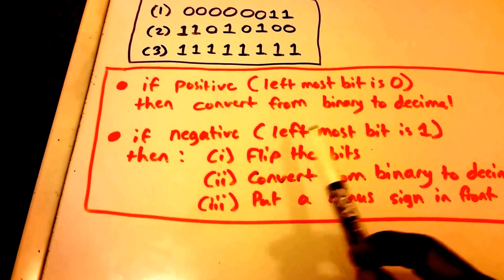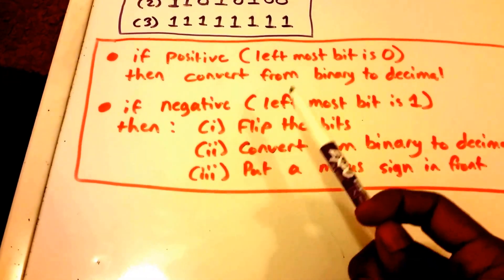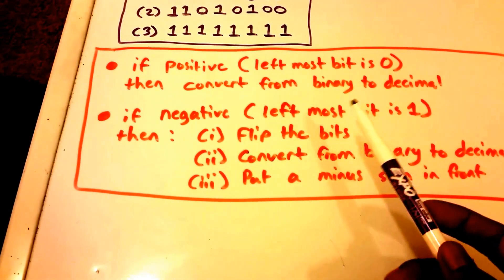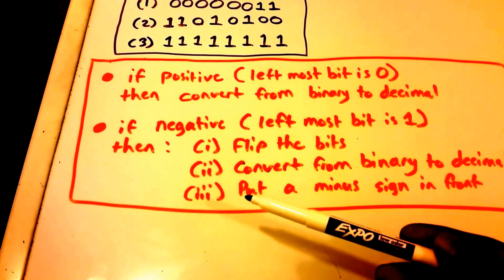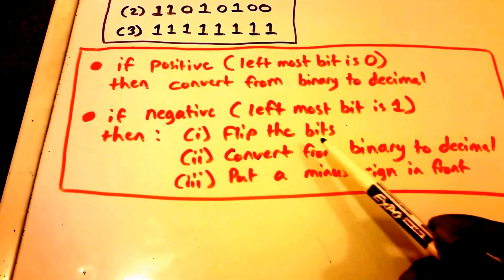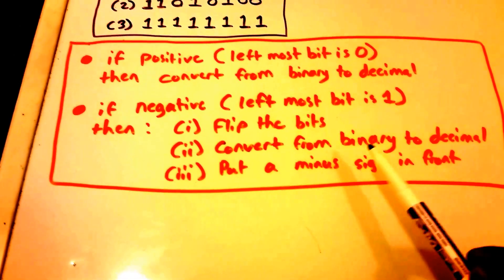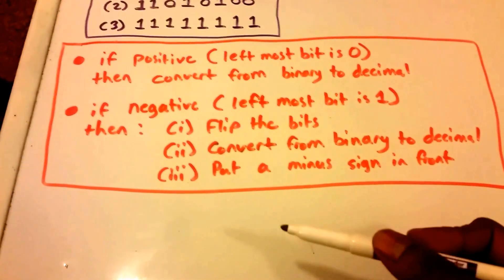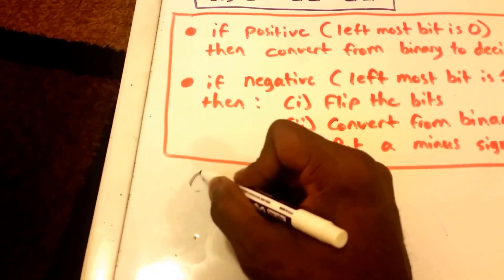If the binary number is negative — meaning the leftmost bit is a one — we follow these steps: first, flip the bits, changing zeros to ones and ones to zeros. Then convert from binary to decimal normally, and finally put a minus sign in front of the value we get.